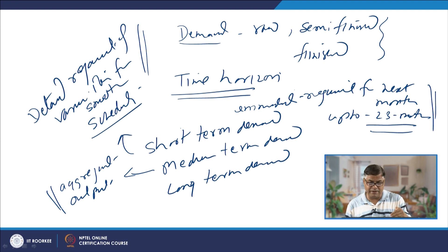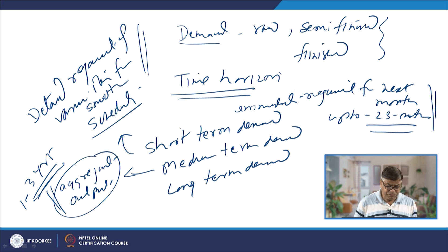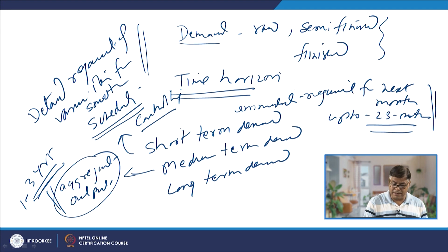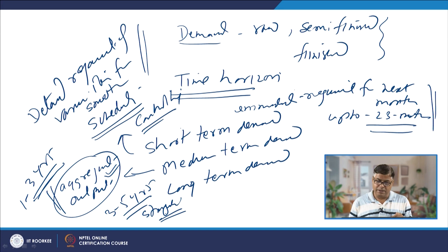In medium-term, aggregate output is needed — like say, a company manufacturing a number of types of products wants to know the general trend of demand over a 1 to 3 year basis. What will be the aggregate requirement for various products on a medium-term basis? And then there is the long-term basis — say 3 to 5 years — which is more strategic in nature, covering what the general trend of technology will be and what products will be sold.